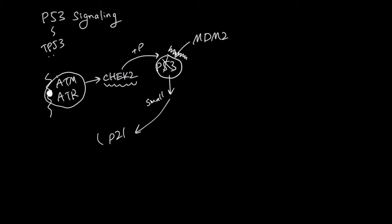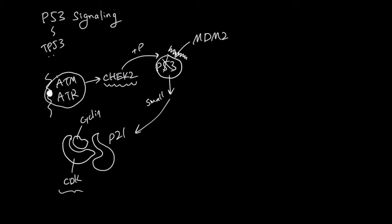P21 is a protein that can bind to the CDK-cyclin complex. Here is the cyclin and here is the CDK. As you recall, the CDK-cyclin complex makes sure that the cell cycle moves forward. But when P21 gets activated, it is going to bind to this CDK-cyclin complex and inactivate it. Because of this, the cell is going to stop dividing and wait for repair, or maybe not repair and die later.